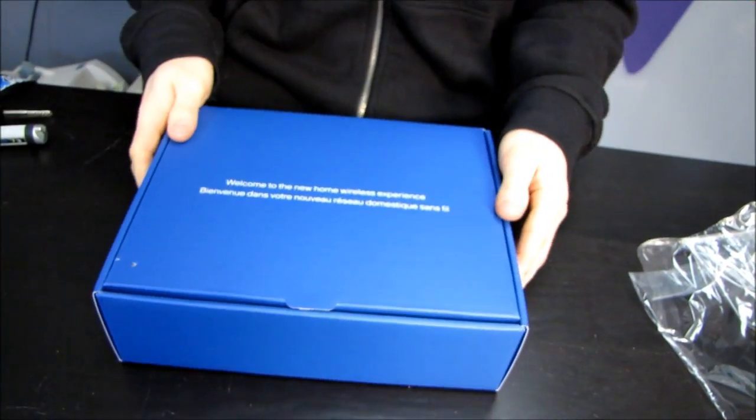So let's open it up and have a look at what is inside. Oh, the side of the box is actually open, so I could have just taken it out that way. Okay, welcome to the new home wireless experience, with a cat bite in it.